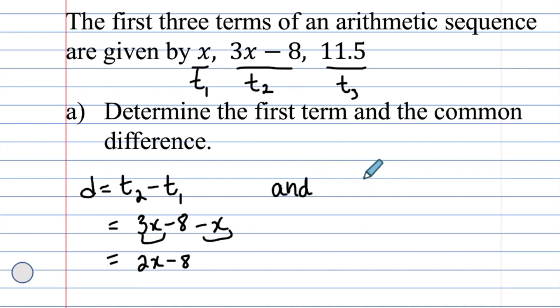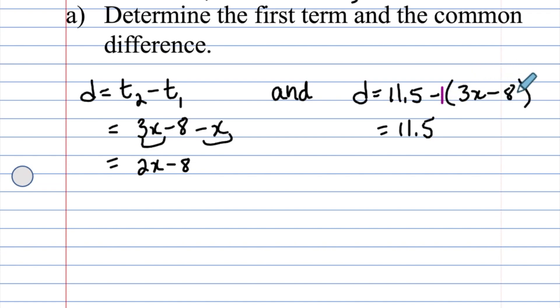And we have d equals 11.5 subtract 3x minus 8. We need brackets around the 3x minus 8 because it's the whole thing. We're subtracting all of it from 11.5. And that gives us 11.5. Careful, this is a negative 1 times this whole thing. We need to distribute the negative 1 through. Negative 1 times 3x is negative 3x, and negative 1 times negative 8 is a positive 8. Darken that sign because that is where most students make a mistake. We get negative 3x and then 11.5 plus 8 is 19.5, and that's our d value.